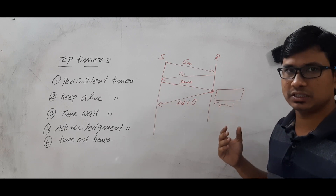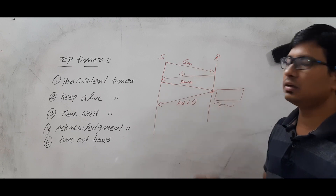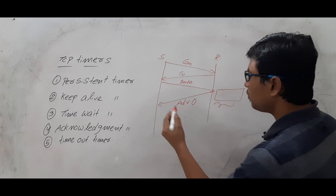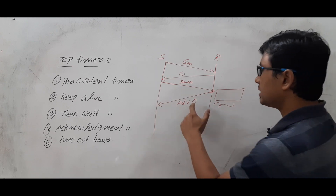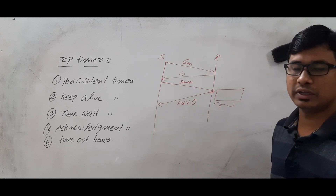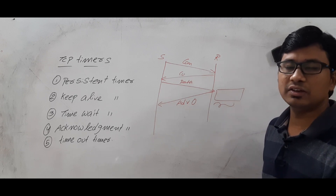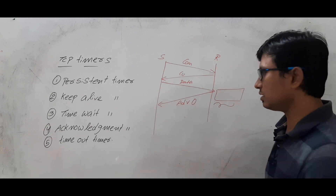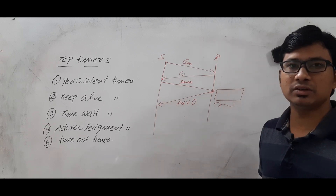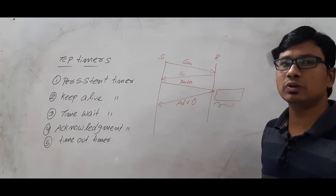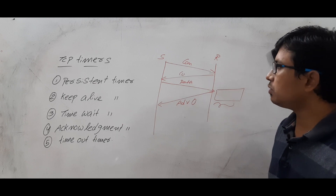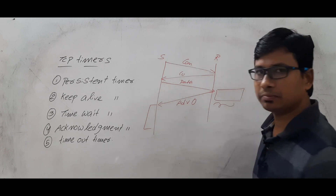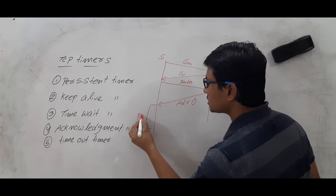When the buffer at the receiver is full and not being processed, the receiver will send an advertisement window size of zero, meaning it cannot further receive information. Once the receiver processes the information in the buffer, the buffer will be empty again. So when the sender receives the advertisement of zero, it should not transfer data — the segments will be dropped because the buffer is full.